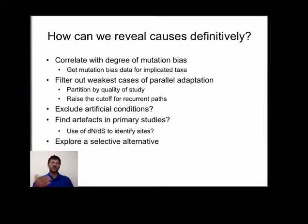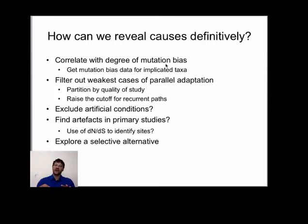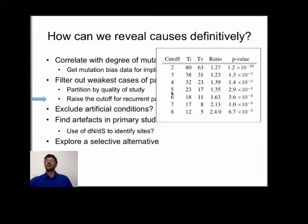These are some things that are in progress, as we're in the middle of this project. One obvious step is to get independent measurements of mutation bias for different taxa and see if evolutionary transition-transversion bias is higher in taxa that have a higher mutational bias. Another issue is the extent to which published reports may be contaminated with noise from neutral parallel changes that appear adaptive. One way to address this is to raise the bar: instead of pathways with two or more changes, we can look at three or more, four or more, five or more. As we raise the cutoff we have fewer data, but there's still a several-fold excess of transitions, and this excess remains significant.